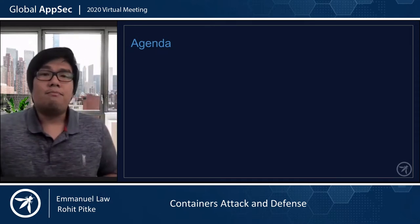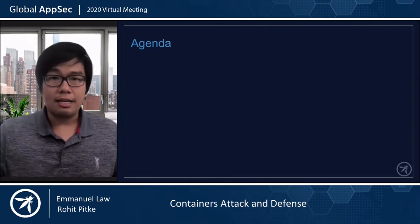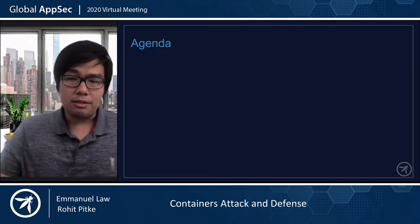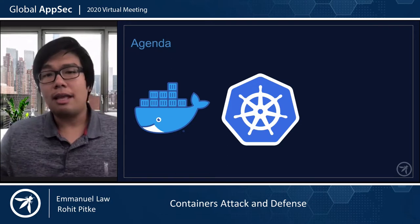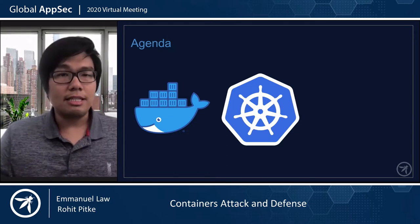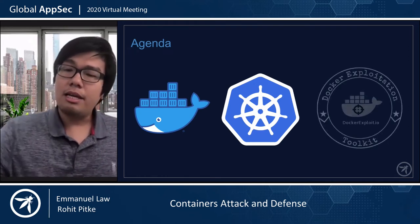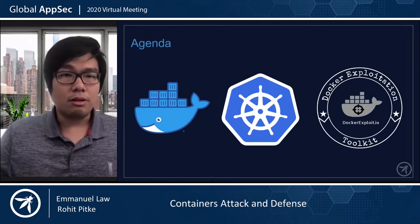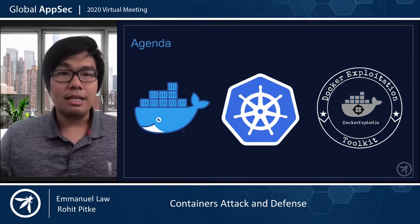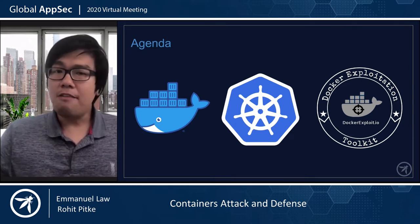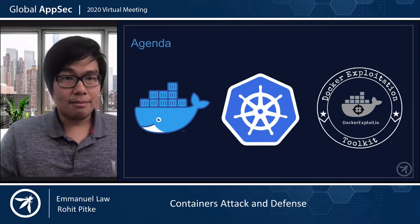Container is a very broad topic — there's so much to talk about, and we can't possibly cover everything today. Instead, what we are going to do is focus on just the Docker and the Kubernetes environment. We'll go through some common examples of vulnerabilities that we see, from breaking out of these containers to lateral movement. Today we will also be releasing a tool called the Docker Exploitation Toolkit — a collection of mini tools that follows the Unix philosophy, whereby each tool does just one thing, but does it well.